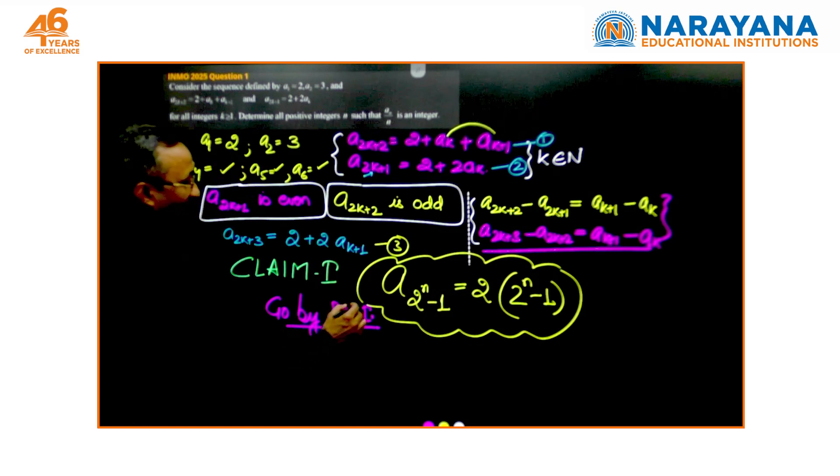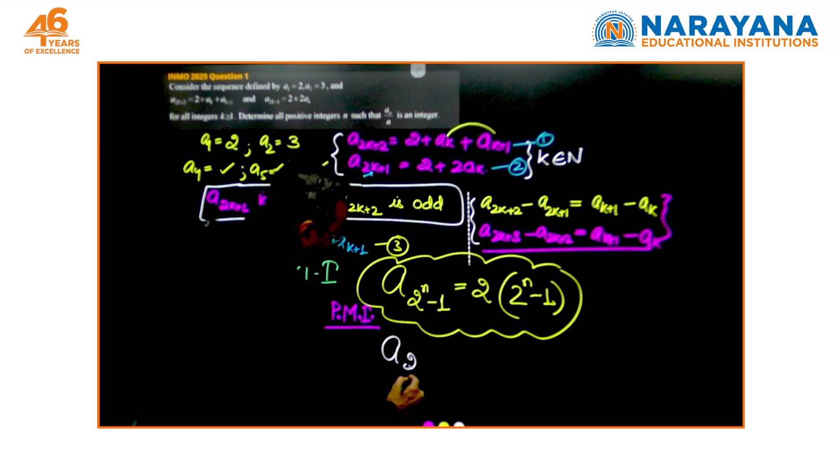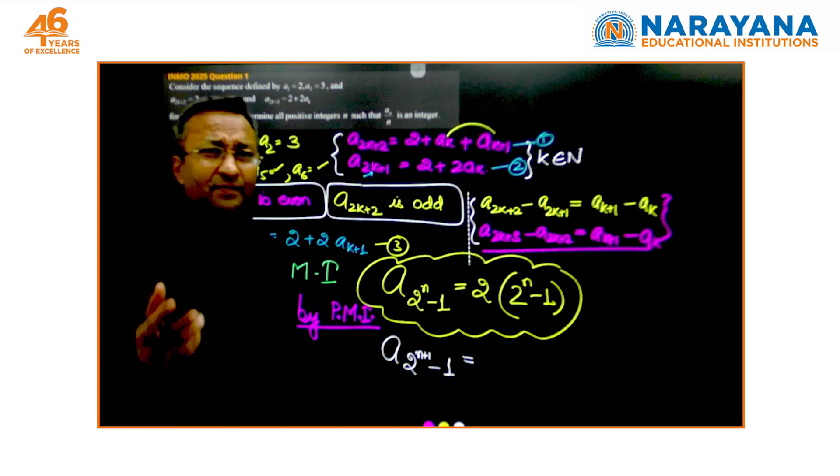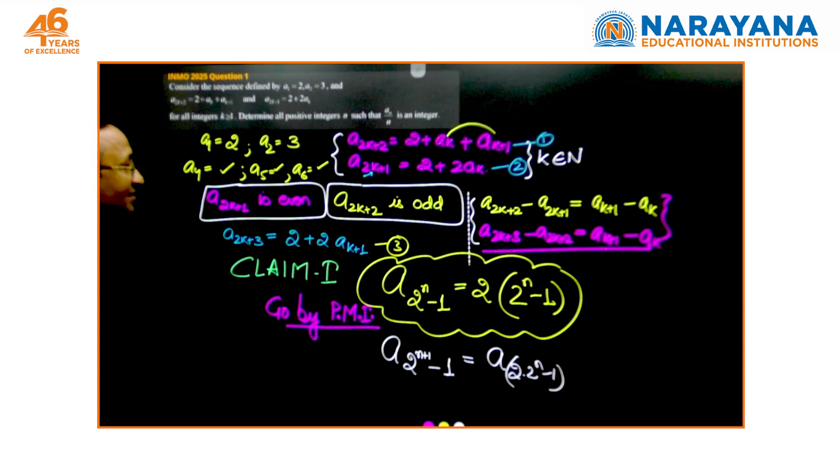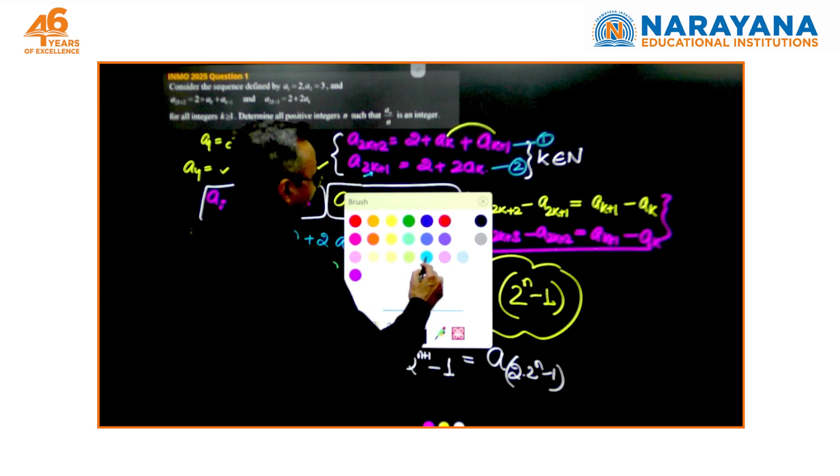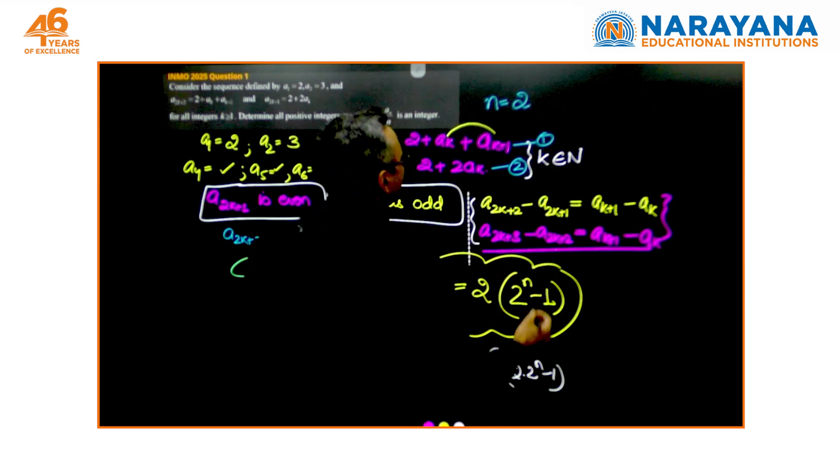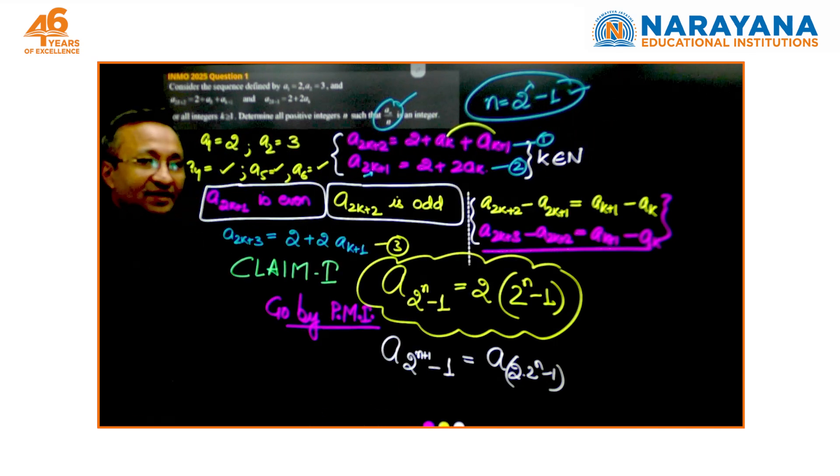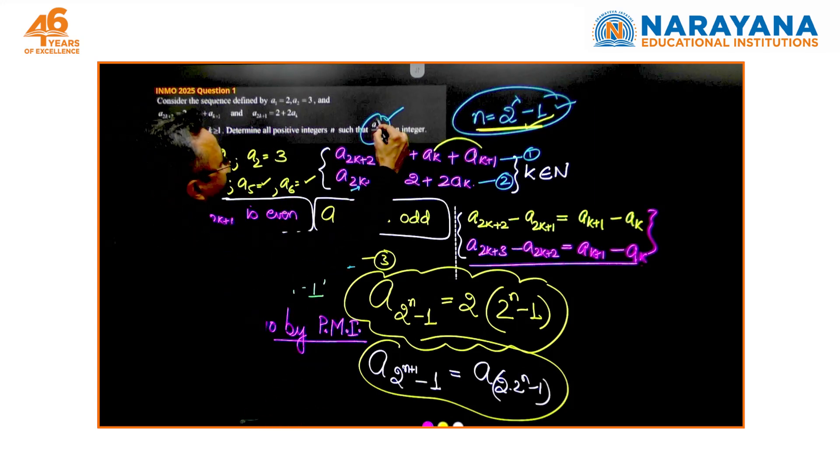I have no clue whether this holds true throughout, but for initial few values you find that this is true, and in order to establish those few values what we do is we go by principle of mathematical induction. From this point forward what we do is we assume this to be true and place n equals n+1. So a_{2^{n+1} - 1} should ideally be equal to 2 times 2^{n+1} - 1. For this to be true you will write this as a_{2 times 2^n - 1} and based on these results you very quickly realize that this is done.